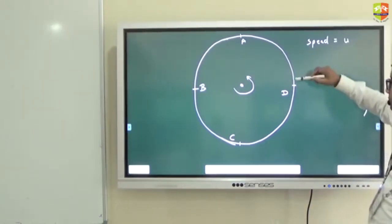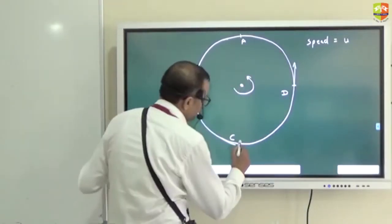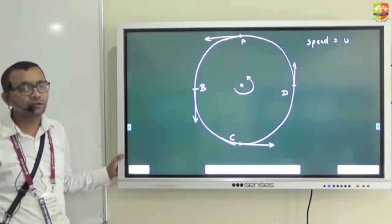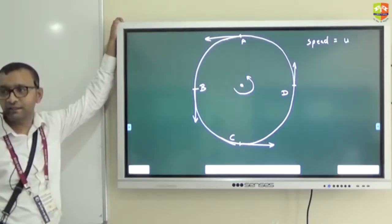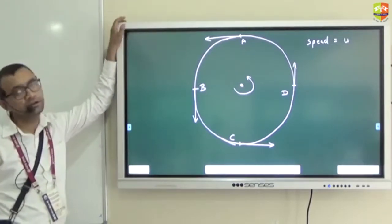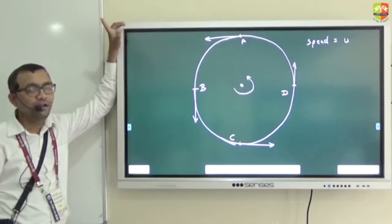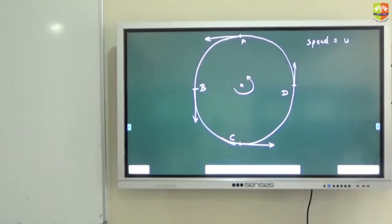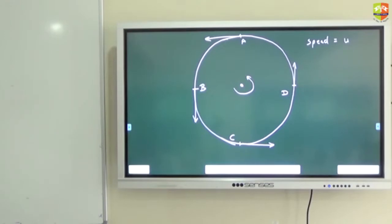The velocity at each point will be tangent to the circle at that point. At point C it will be like this, at point A like that, at point D like this. So is the velocity changing or constant? The velocity is changing, but the magnitude of velocity is constant. Since velocity is changing with time, acceleration must be present.